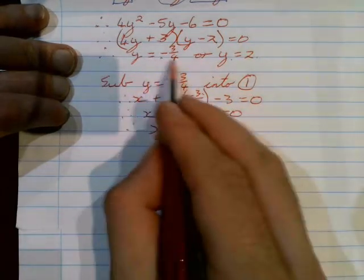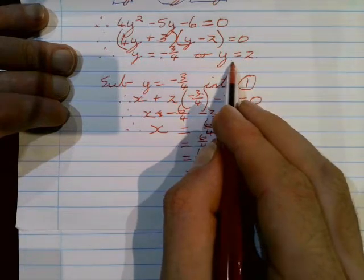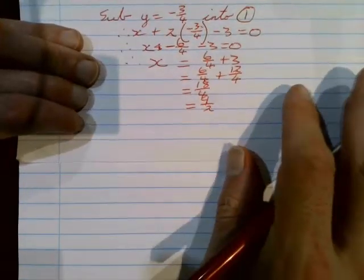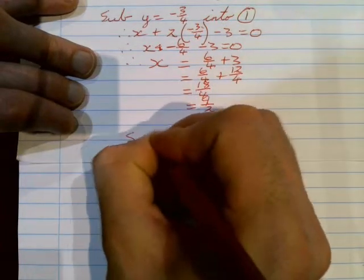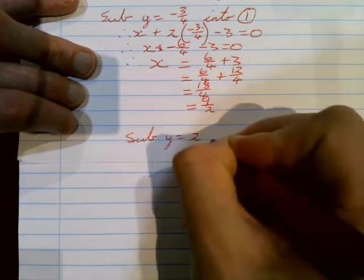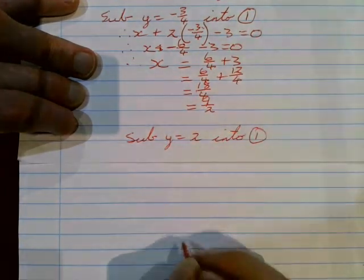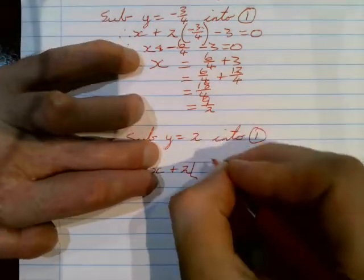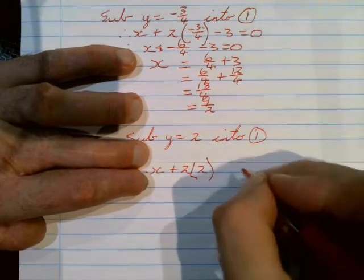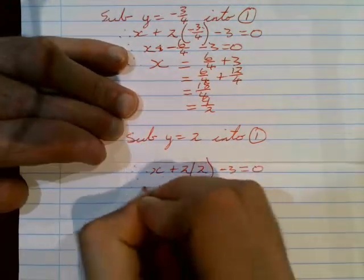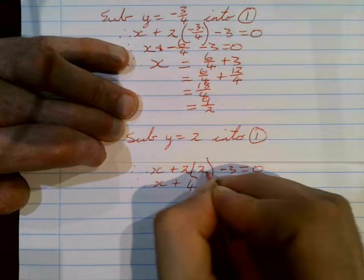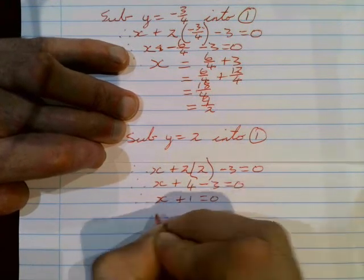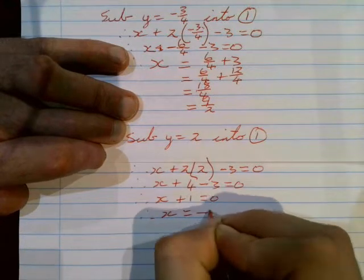But we're not done — we've only substituted in one value for y. We have to do the same for the other y value. So we substitute y equals 2 into equation number one. That gives us x plus 2 times 2 minus 3 equals zero, which simplifies to x plus 4 minus 3 equals zero, so x plus 1 equals zero.